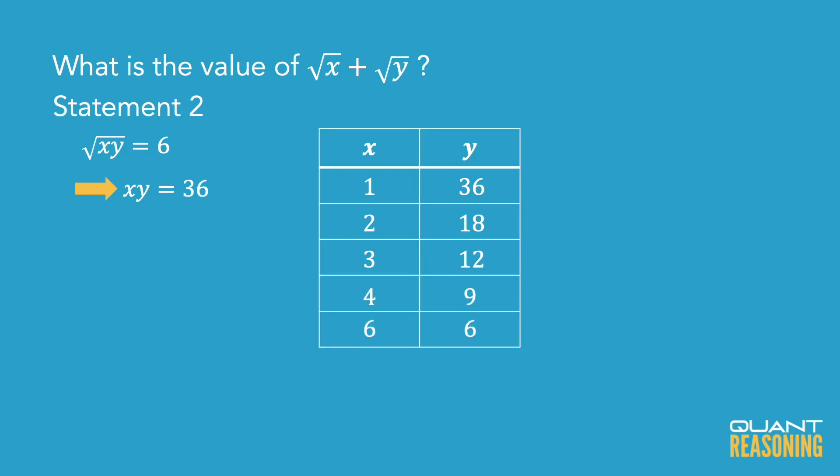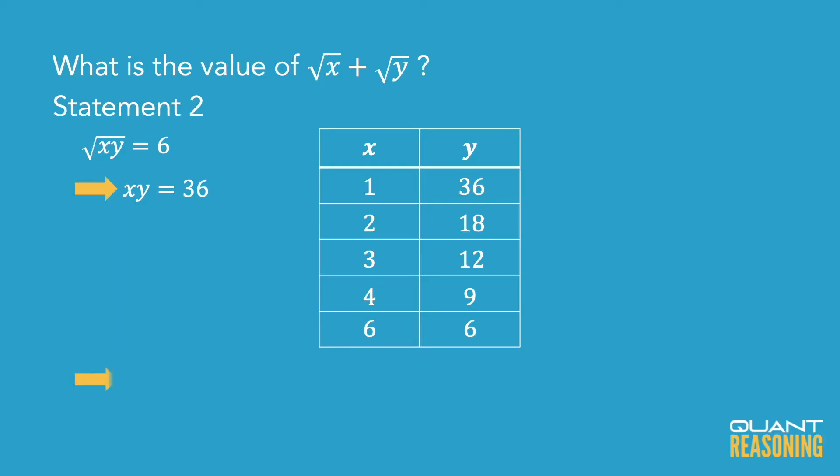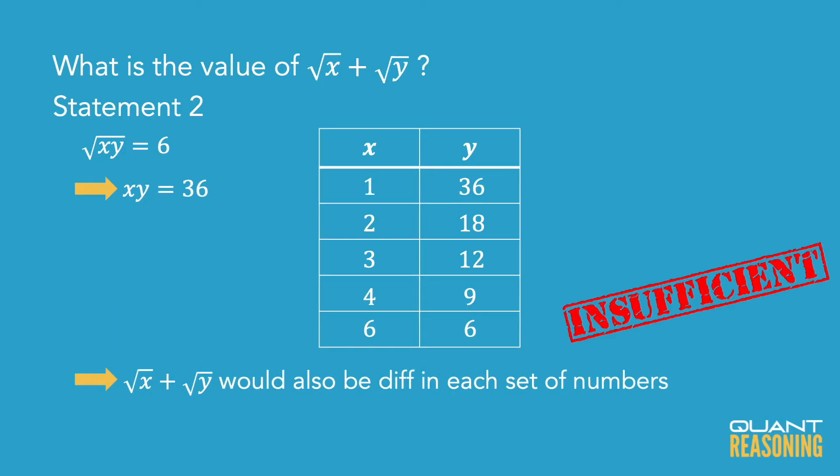We're looking for the sum of their roots, but the root of 1 plus the root of 36 is not the same as the root of 6 plus the root of 6. So statement 2 is not sufficient on its own either, and we should eliminate B.